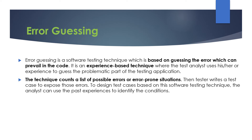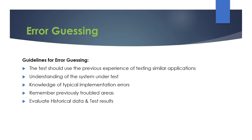Error guessing is nothing but experience-based testing. The tester knows where the error-prone areas are in the entire system and writes more test cases to get an error-free system out of the testing. The guidelines for error guessing testing are purely based on experience and historical data.